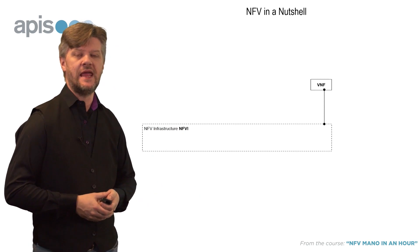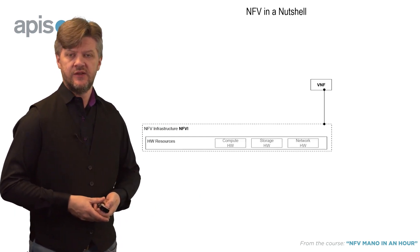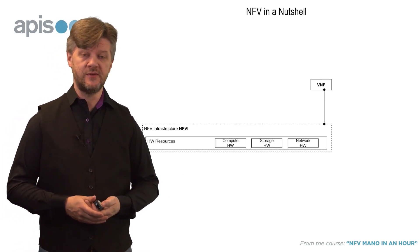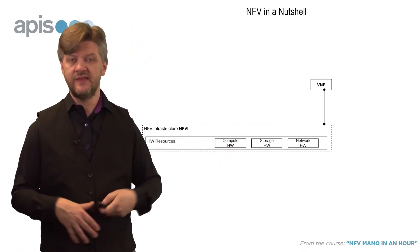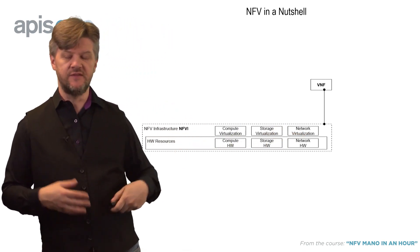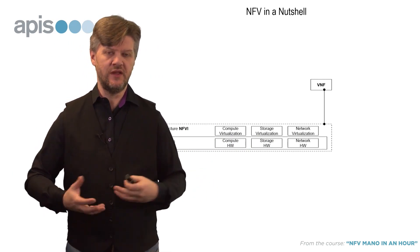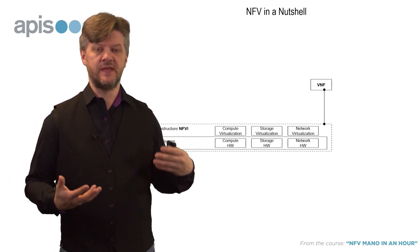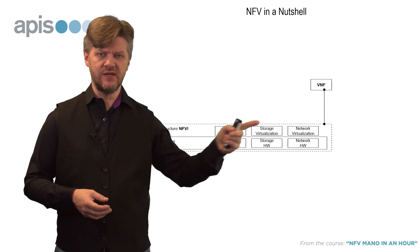This all runs in the NFVI, the NFV infrastructure, because that's where we have the real hardware resources. The real hardware resources come in the holy trinity of cloud computing resources, which is usually divided into compute, storage, and network. Then we have technology to virtualize these things. The technology to virtualize a server is very different from the technology used to virtualize a hard drive, or a switch, or a router, or a cable — so that's why we like to separate these things.